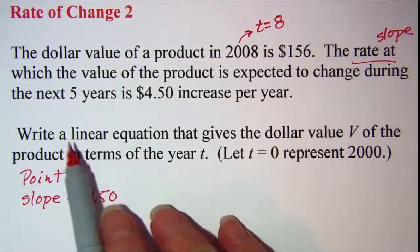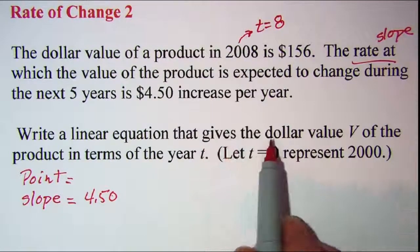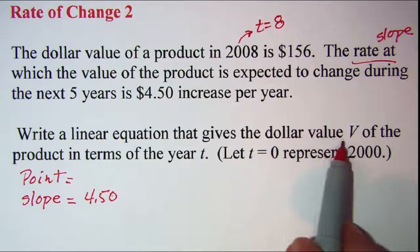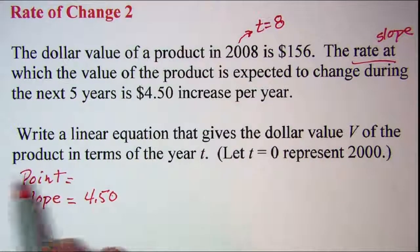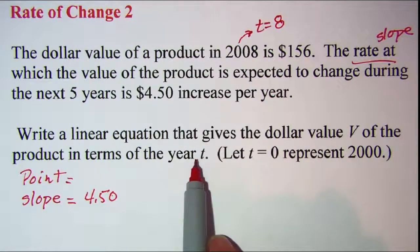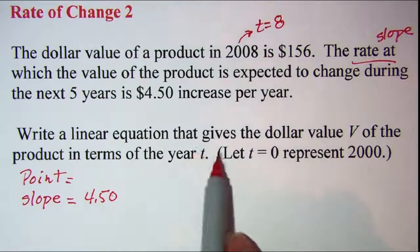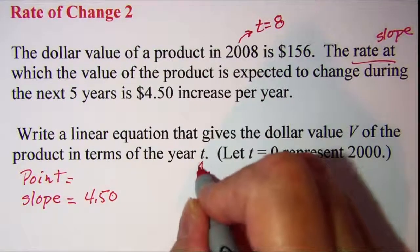And we are asked to write a linear equation that gives the dollar value v of the product in terms of the year t. So t is our independent variable.